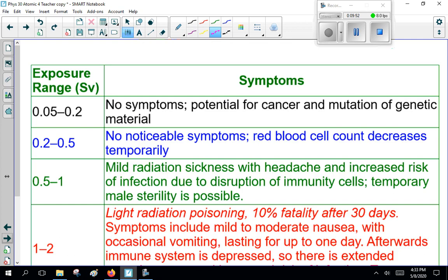Now, symptoms for exposure to radiation. Sievert is the unit, one of the units used for exposure to radiation. Now, that has to do with how much radiation you're exposed to and how dangerous it is. In a few minutes, we'll talk about alpha, beta, gamma radiation. You realize some is less dangerous than others. Anyway, 0.05 to 0.2 sieverts, no symptoms, potential for cancer mutation of genetic material. 0.02 is what we're normally exposed to. So this is beyond, this is more than we're normally exposed to.